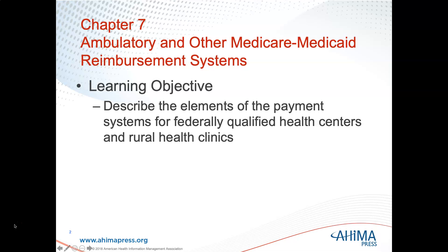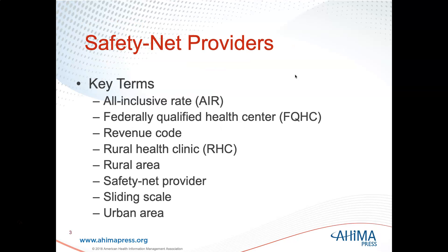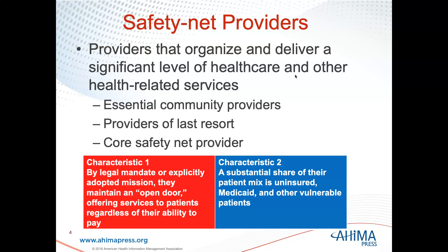When we talk about safety net providers, what we're really referring to are federally qualified health centers and rural health clinics. Some key terms you need to know are: all-inclusive rate, federally qualified health center, revenue code, rural health clinic, rural area, safety net provider, sliding scale, and urban area.